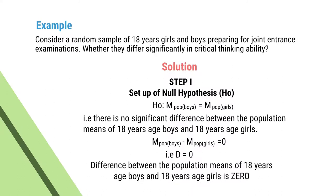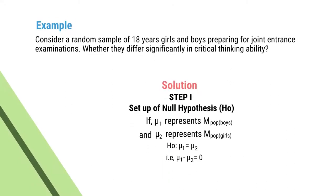There are several steps. Let us discuss each step separately. Step 1: First, set up the null hypothesis. In the present example, our null hypothesis states that the population mean of boys equals the population mean of girls — that is, there is no significant difference between the population means of 18-year boys and 18-year girls. That is, population mean of boys minus population mean of girls equals zero, i.e., μ1 minus μ2 equals zero.